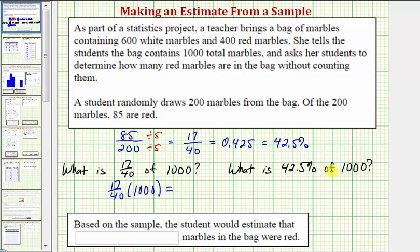To find 42.5 percent of 1,000, because 42.5 percent as a decimal is 0.425, we want to find 0.425 times 1,000 to find 42.5 percent of 1,000.